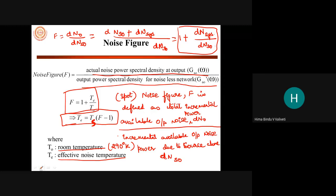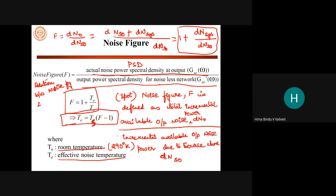The noise figure is also obtained in terms of effective noise temperature. This is the relation between noise figure and effective noise temperature. For spot noise figure, the noise figure F is defined in terms of the total incremental available output noise power.